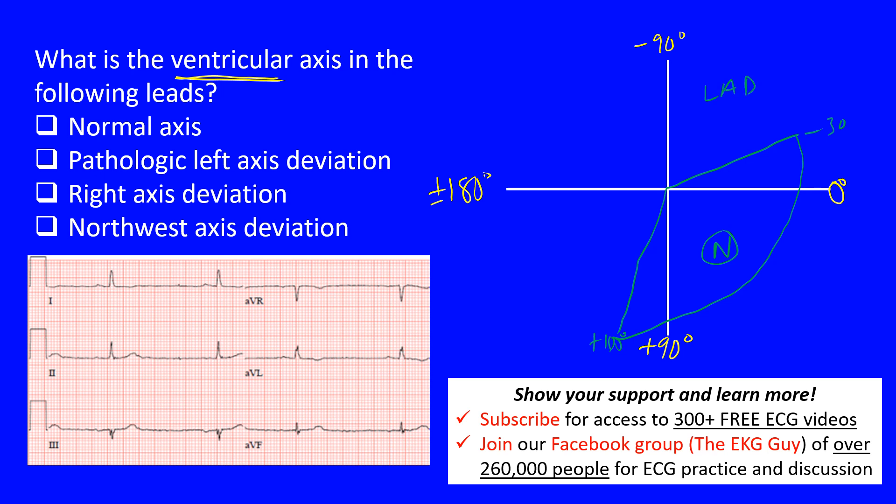If you're up in this region, we call this a left axis deviation or pathologic left axis deviation. Normal axis would be here, and this is the right axis deviation, which is the third answer choice. Up here is our northwest axis; you may also hear extreme axis deviation or right superior axis or no man's land. This is the pathological leftward axis deviation; this is more physiologic.